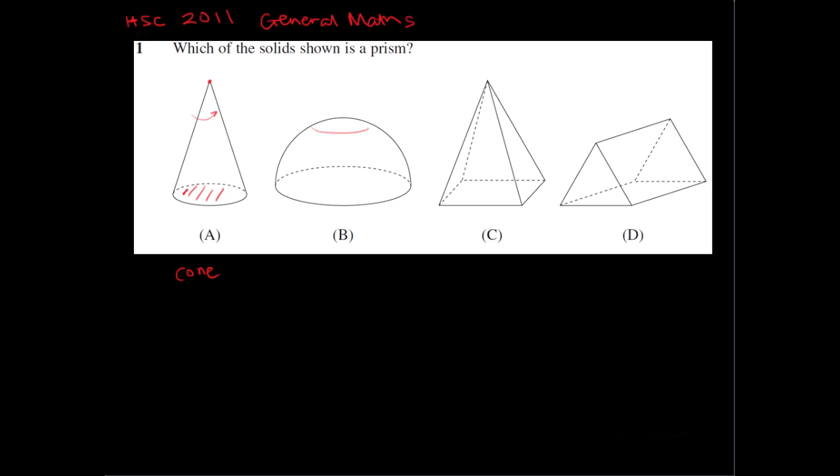B, again we've got a curved surface and a flat circular base without an identical circular base on the other side, on the top here. So this isn't a prism, this is half a sphere or a hemisphere.